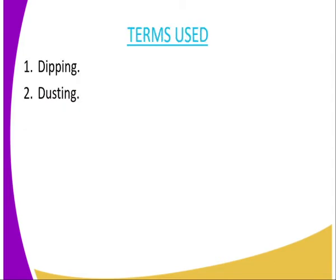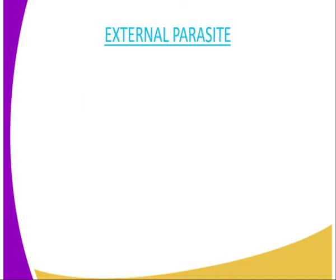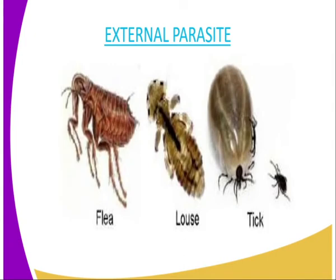The terms used: dipping refers to a method of controlling external parasites whereby the animal is dipped into a solution containing a chemical called acaricide, and it is meant for killing all the external parasites. Dusting is whereby the poultry is dusted with a pesticide which is meant for killing the parasites which normally lower the production levels of poultry. External parasites are the parasites that affect livestock on the outer side of their body. They are also referred to as ectoparasites.